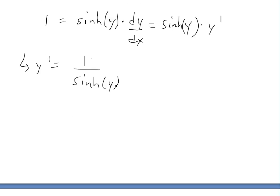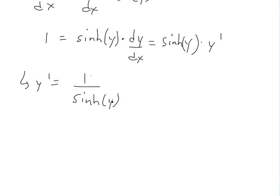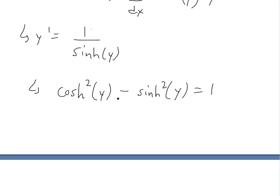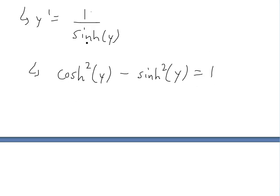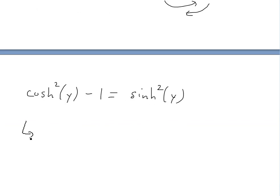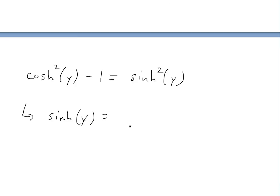Now we want to write this in terms of x. We use the hyperbolic identity — proof in the video link below — which states: hyperbolic cosine squared minus hyperbolic sine squared equals 1. Rearranging gives us hyperbolic cosine squared of y minus 1 equals hyperbolic sine squared of y. Taking the square root: hyperbolic sine of y equals plus or minus the square root of hyperbolic cosine squared of y minus 1.